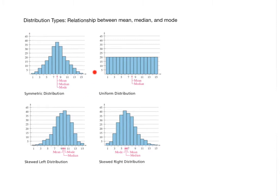The first is called a symmetric distribution — you could draw a vertical line and fold it in half, with roughly the same shape on both sides. Next is a uniform distribution, which means you have the same frequency across all classes. Then there's a skewed left distribution, where a tail goes off to the left, and a skewed right distribution, where you have a longer tail going to the right. These are four common distributions you should know.